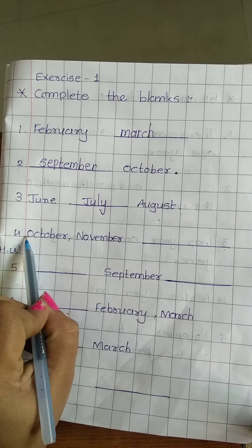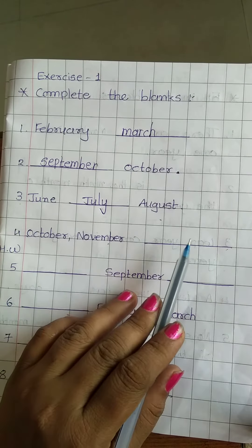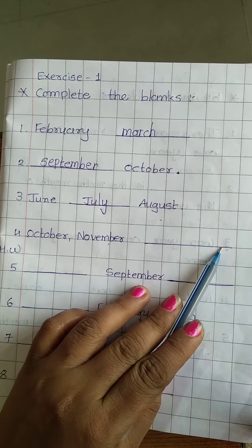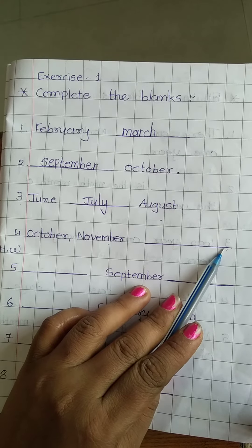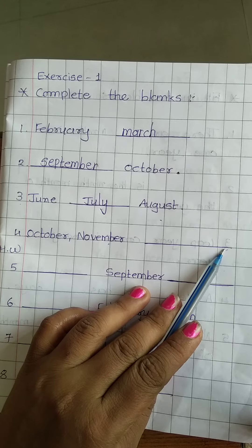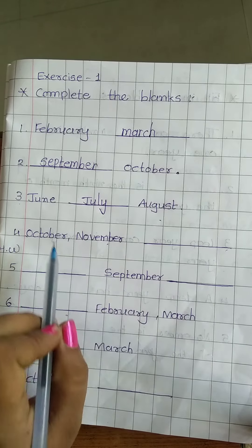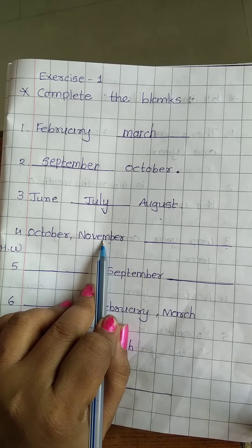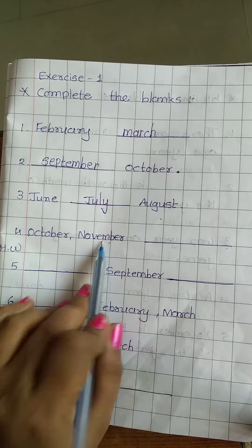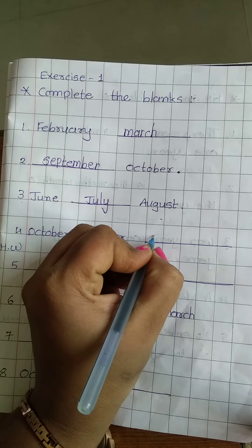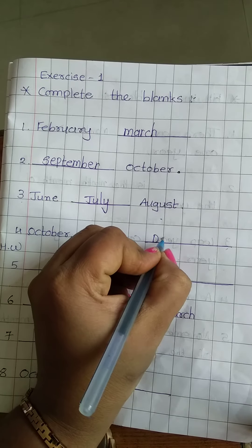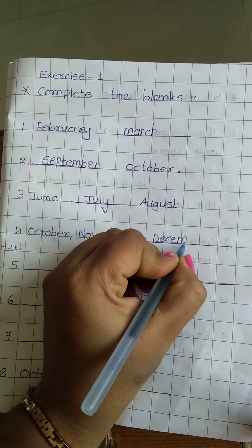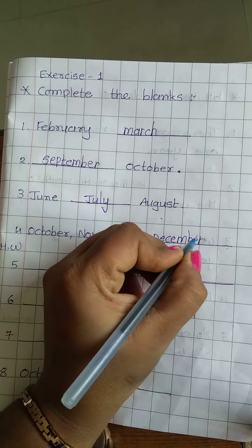Now next. October and November are given, then there is a blank. We count again: January, February, March, April, May, June, July, August, September, October, November — and then which month comes after? November, then December. So we have to write in the blank: D-E-C-E-M-B-E-R, December.